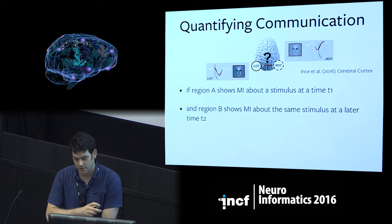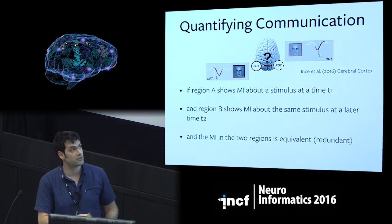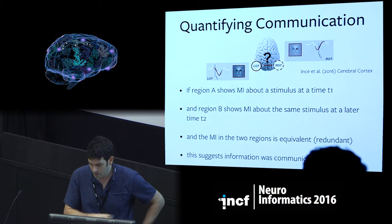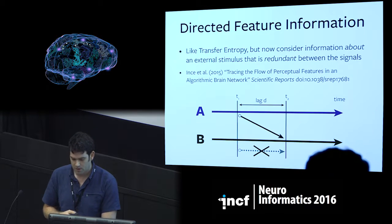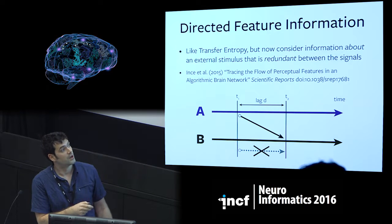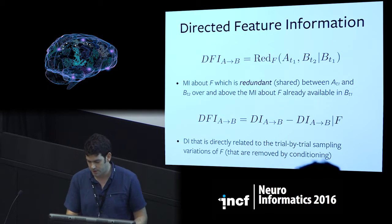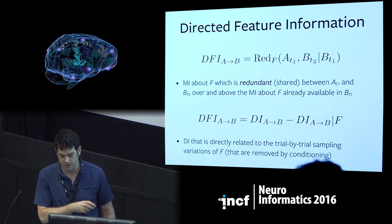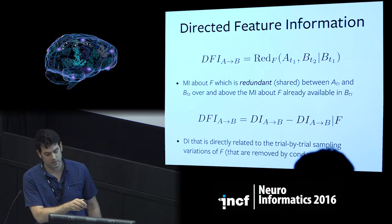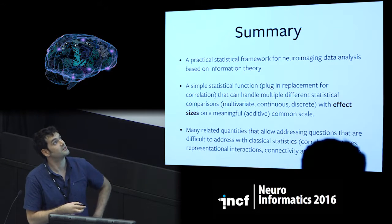— and another region, for example an electrode on the opposite hemisphere, shows information at a later time, and crucially if this information is really the same — the representations are the same in this one- or two-dimensional space — then this suggests the information is communicated from A to B. We have a quantity called directed feature information, which is like an extension of transfer entropy that incorporates this idea, so that instead of thinking about just the activity, we're thinking about the representation of the information content in the signals. It actually measures the redundancy about the feature F between the past of one signal and the present of the other signal, conditioning out the past.